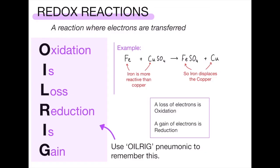An example of a redox reaction is a displacement reaction, which works hand in hand with the reactivity series. For example, Fe (iron) plus CuSO4 (copper sulfate) reacts to make FeSO4 (iron sulfate) and Cu (copper). The iron is more reactive than the copper, so the iron displaces the copper and binds with the sulfate.